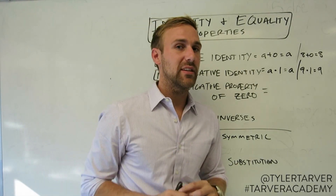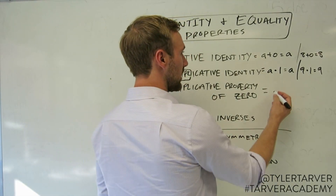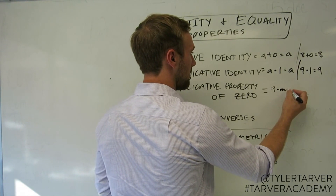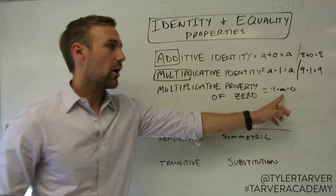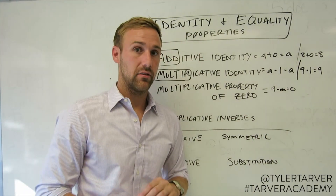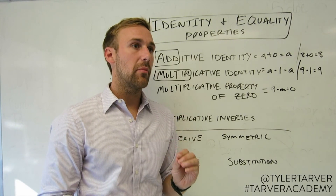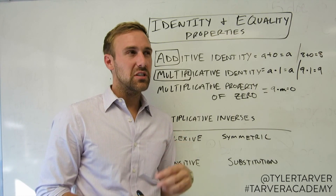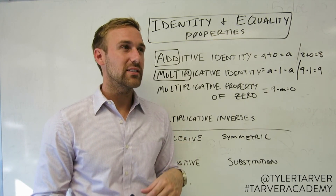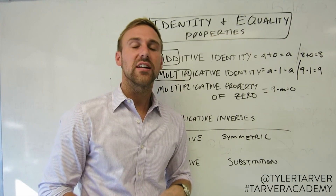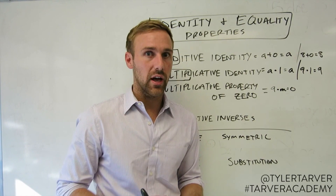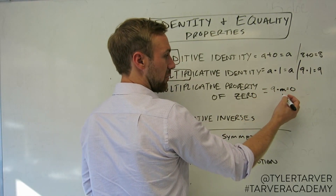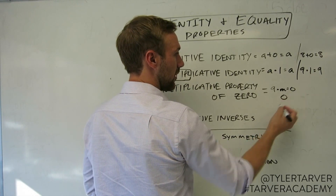What do you know happens when you multiply something times zero? Say we've got nine times m equals zero. What do I know my m has to be? What's the only thing you can multiply a number by to equal zero? Maybe if I get low with those numbers like a one times a negative one — that's negative one. Okay, you're wrong. The only thing you can multiply a number by and get zero is zero.